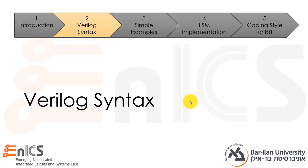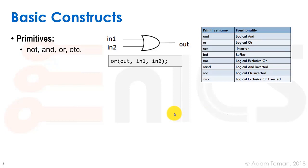Now that we have a basic overview of what a hardware description language is and what Verilog is and how the abstractions go, we'll dive into the Verilog syntax. We start with the most basic thing, which you'll probably never use, which is a primitive. Verilog in the end describes Boolean logic gates, so we have primitives for these Boolean functions: nots, ands, ors, etc.